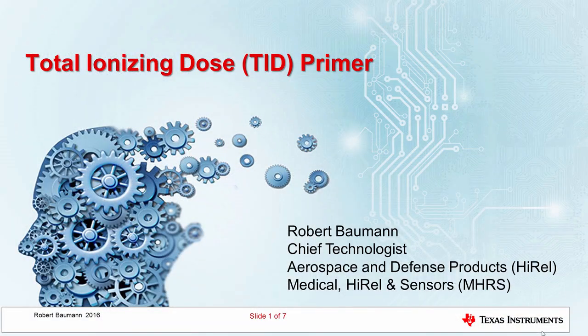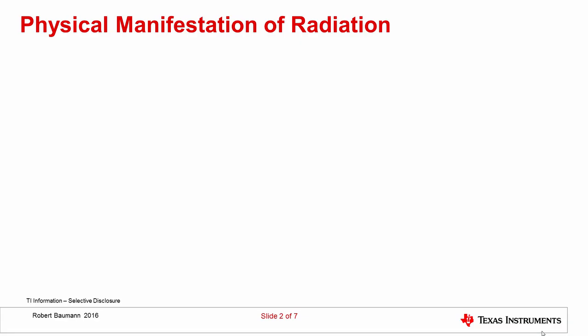In this lecture we'll be talking about total ionizing dose. We focus on the physical manifestation of radiation — how does radiation interact with matter and what does it do to electronic devices? One of the primary ways in which radiation loses energy in matter is by the creation of charge. This excess charge, if nothing is done, will recombine or move away depending on electric fields in the device. In general, the charge generation in semiconductors is transient.